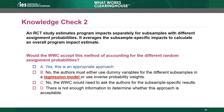The answer is A — this is an appropriate approach. The study used different assignment probabilities and needs to account for them in the analysis. According to the WWC, estimating separate impacts and averaging them is one of three acceptable ways to account for different assignment probabilities. Choice B is incorrect because it includes only two of those acceptable approaches. Choice C is incorrect because the WWC does not need the separate subsample impacts. Choice D is incorrect because the description of the approach is sufficient.